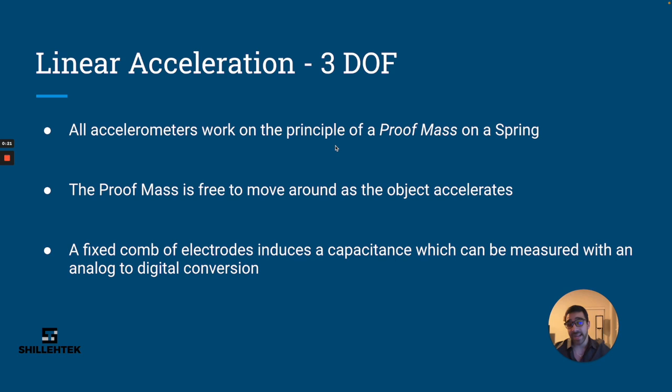As the object accelerates, the proof mass moves. As the proof mass begins to move, it actually changes the distance between the proof mass and a fixed comb of electrodes that's fixed between the proof mass itself. The distance between the proof mass and electrodes as it's changing induces a capacitance and a change in capacitance, which can then be measured and translated into acceleration itself. It's a very clever technique.